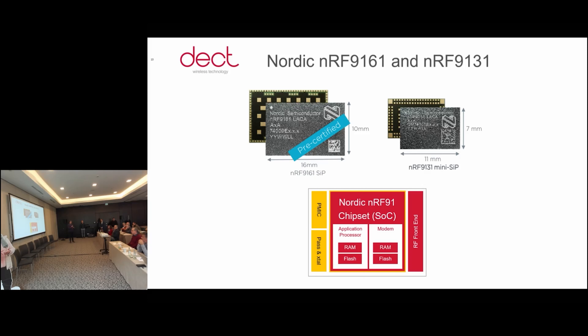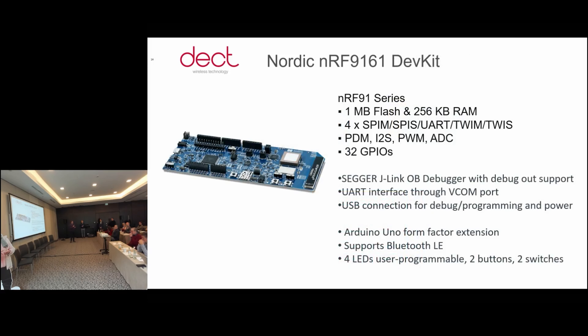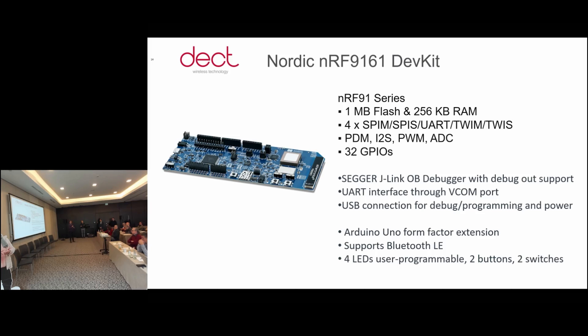The 9131 is slightly smaller. In the 9131, we removed the power management and the crystals from the SiP, which makes it possible to create more cost-optimized designs, especially for power management. In DECT NR+, when you get started, many applications will be mains powered, so you can choose a different power management solution than what's in the 9161. The 9161 is really advanced and complex for battery-operated operation, and that's not always needed. For development, there is a development kit available for the 9161 — but since they are software compatible, you can use it to develop for the 9131 as well. The DevKit has Arduino headers for extensibility to add sensors, and you can flash and debug your application on it.